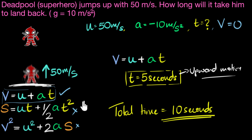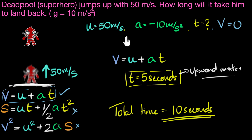So what did we see in this video? Whenever we have problems with both upward and downward motion, we can choose only one of them to solve our problem. The secret is that the upward motion is the exact reverse of the downward motion, meaning it takes the same time to go up as it does to come back down.